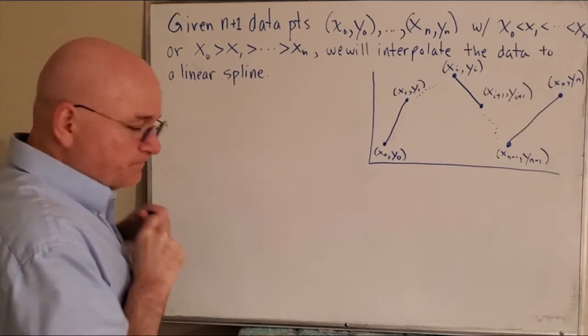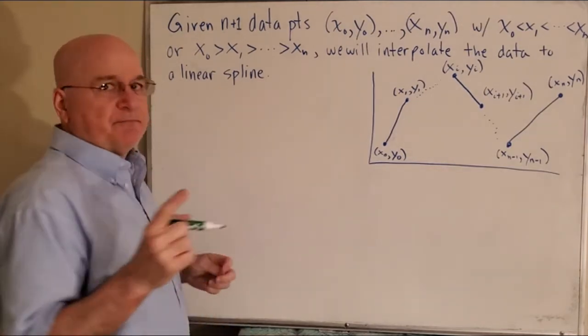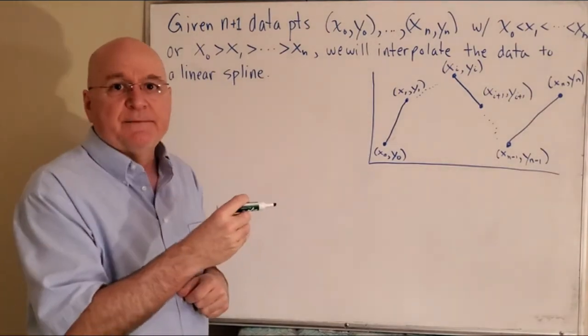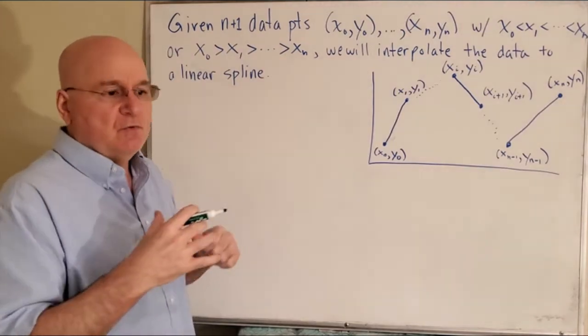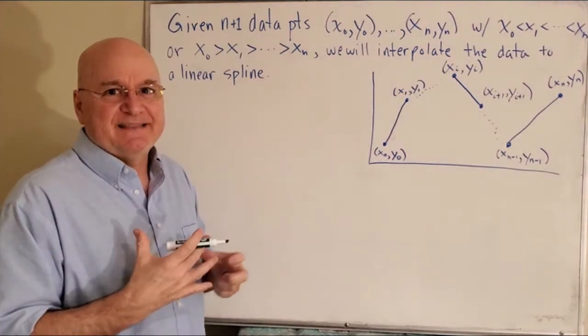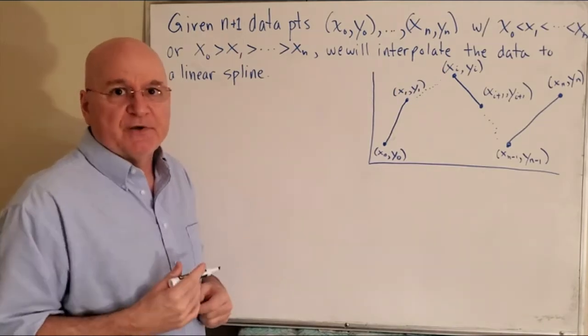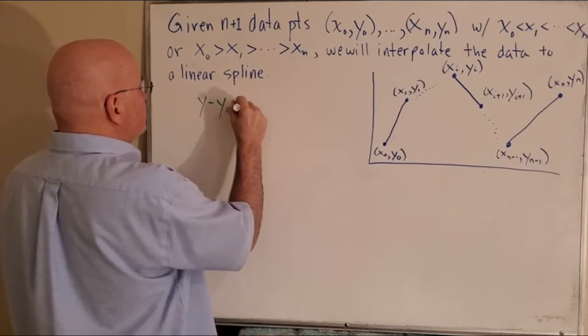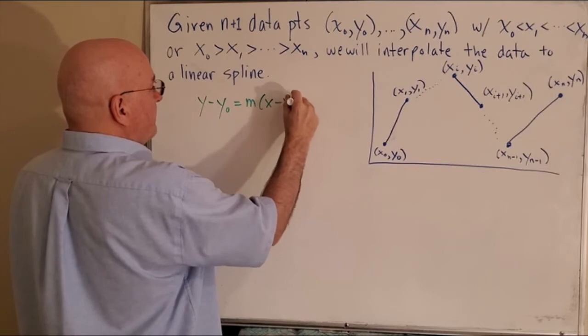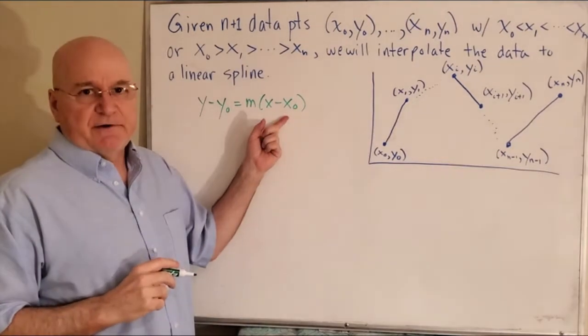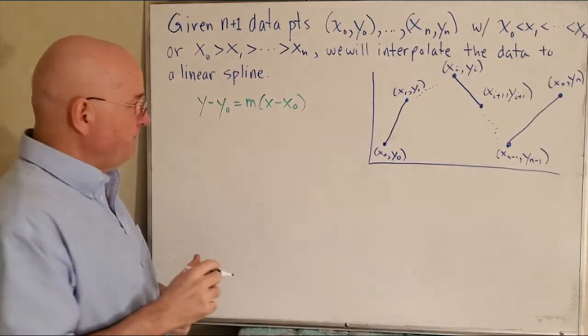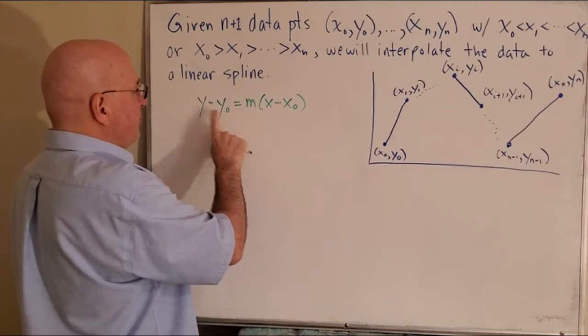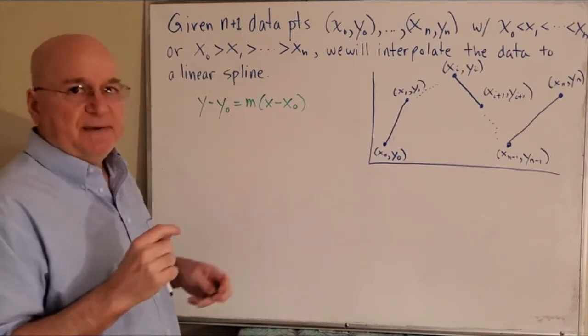Okay, so what we're going to do is go back to pre-calculus for a minute. And remember when you have the slope of a line, and you have one point, you can use the point slope formula to get the equation of a line that has that slope and goes through the point. Well, the equation is y minus y0 equals m times x minus x0. This is the equation of the line that has slope m and passes through the point x0, y0. So that's going to be the basis of what we're doing now.